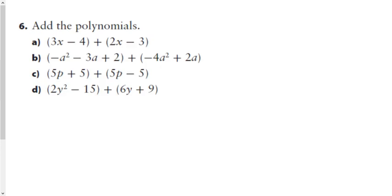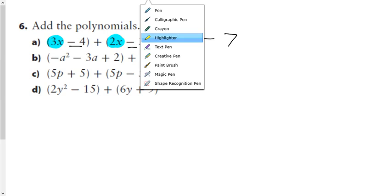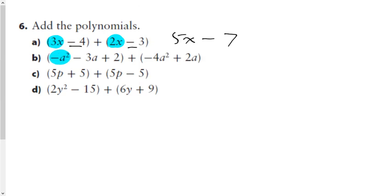The second question says add the polynomials — it does not say model it, which is great. In the first term, look for the other x's and combine: add your coefficients, you get 5x. A negative 4 and a negative 3 make a negative 7, so we're going to have 5x minus 7.